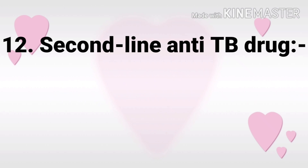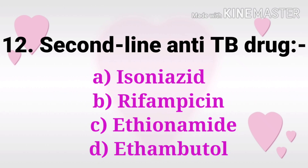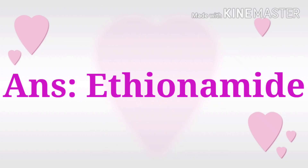Question 12: Second-line anti-TB drug? The options are isoniazid, rifampicin, ethionamide, and ethambutol. The answer is ethionamide.